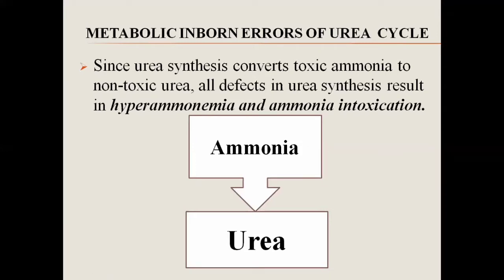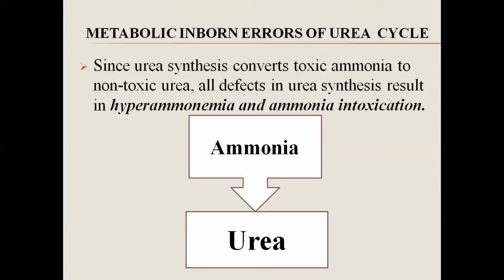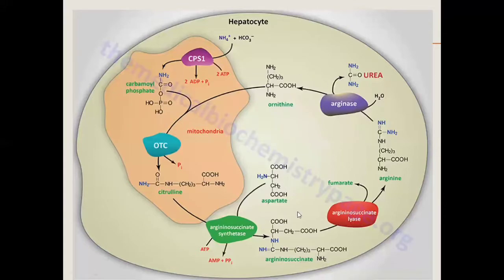Ammonia intoxication also affects the nervous system and the brain. The urea cycle is a five-step reaction in which the first two reactions are more severe, involving accumulation of ammonia. The rest of the reactions, from step three onward, are less toxic compared to these two. The first two reactions occur inside the mitochondria, and the other reactions occur inside the cytoplasm.